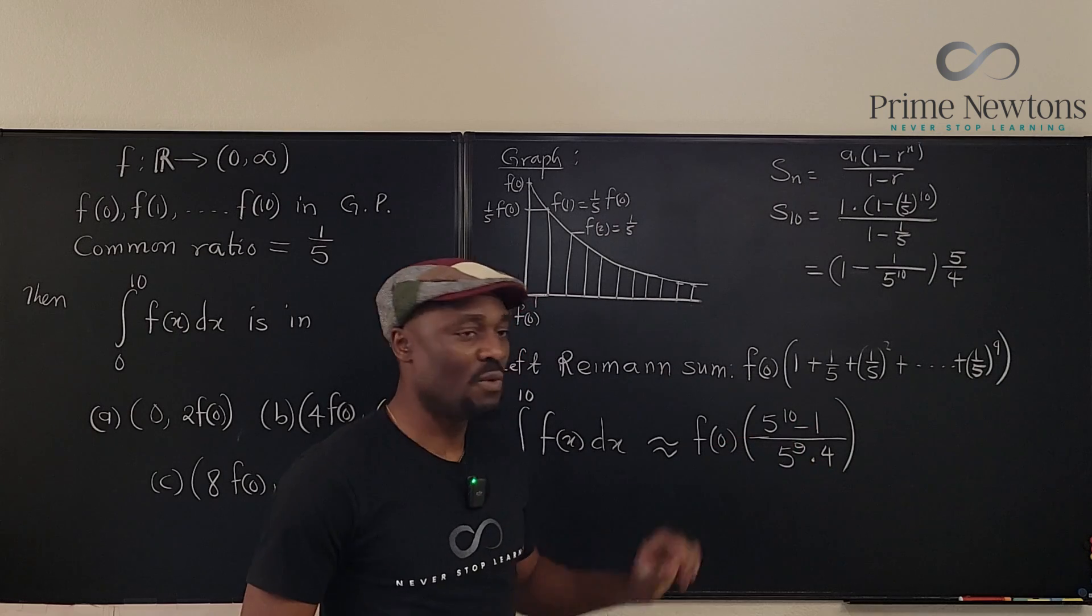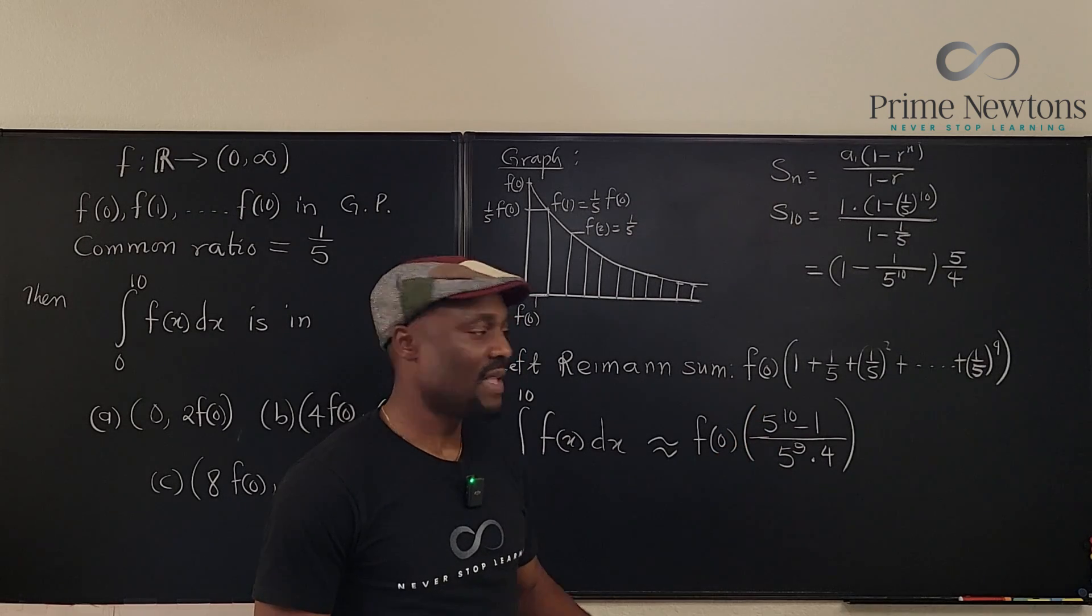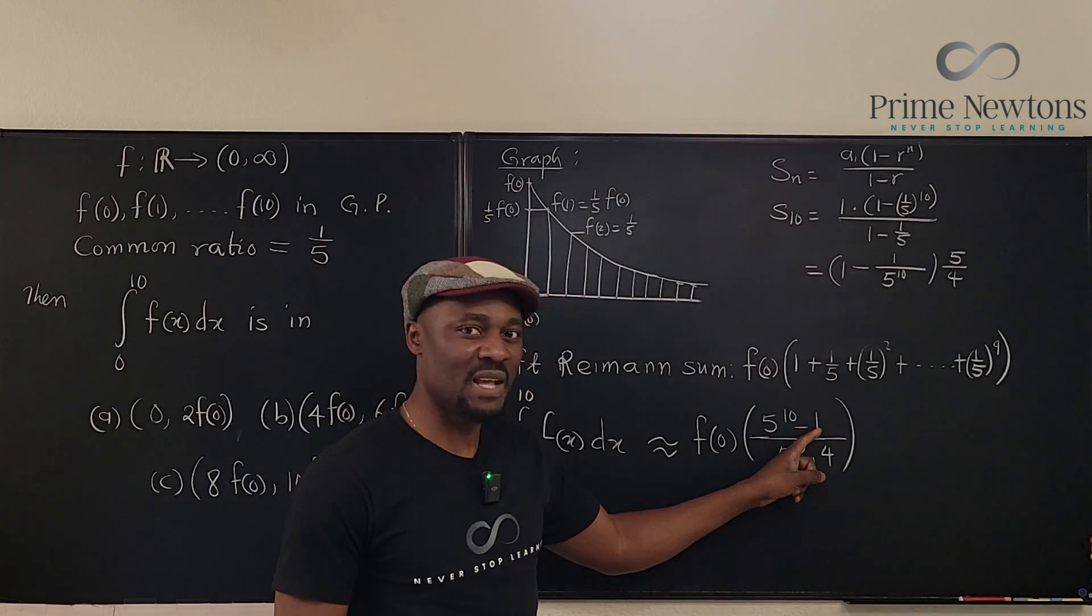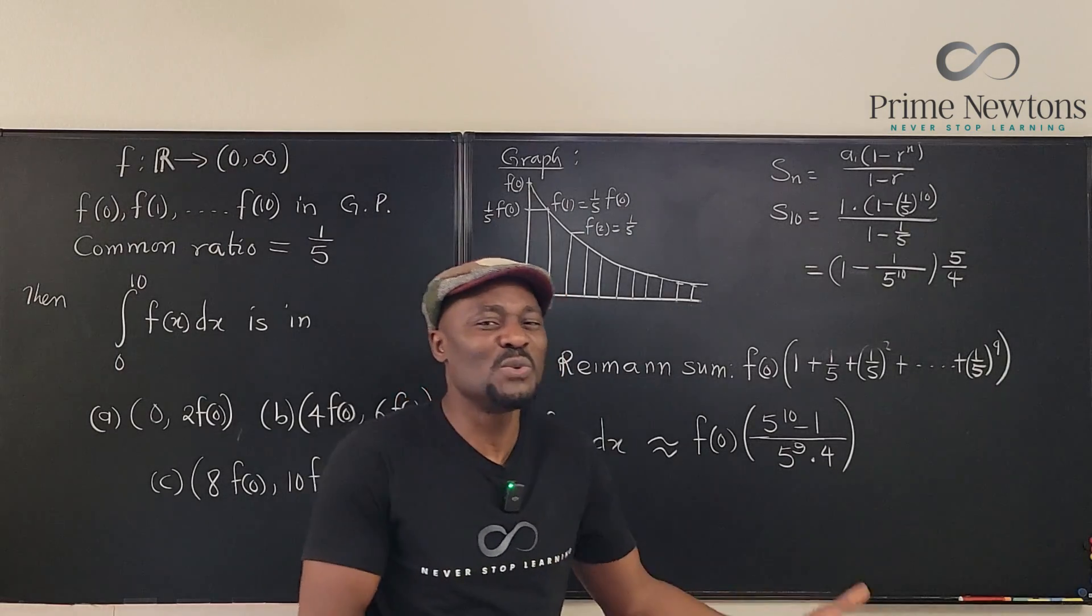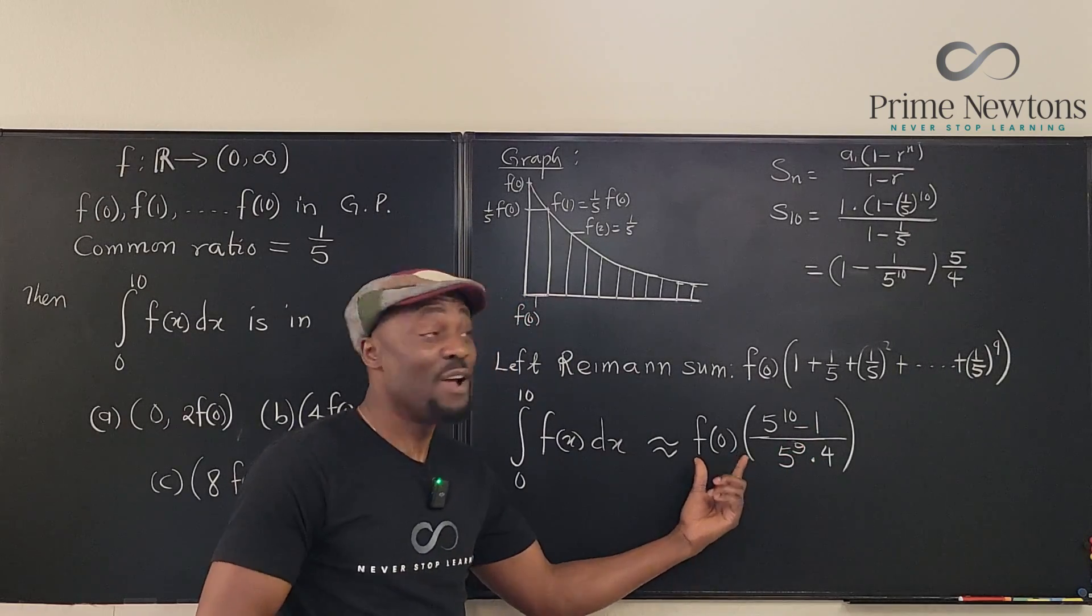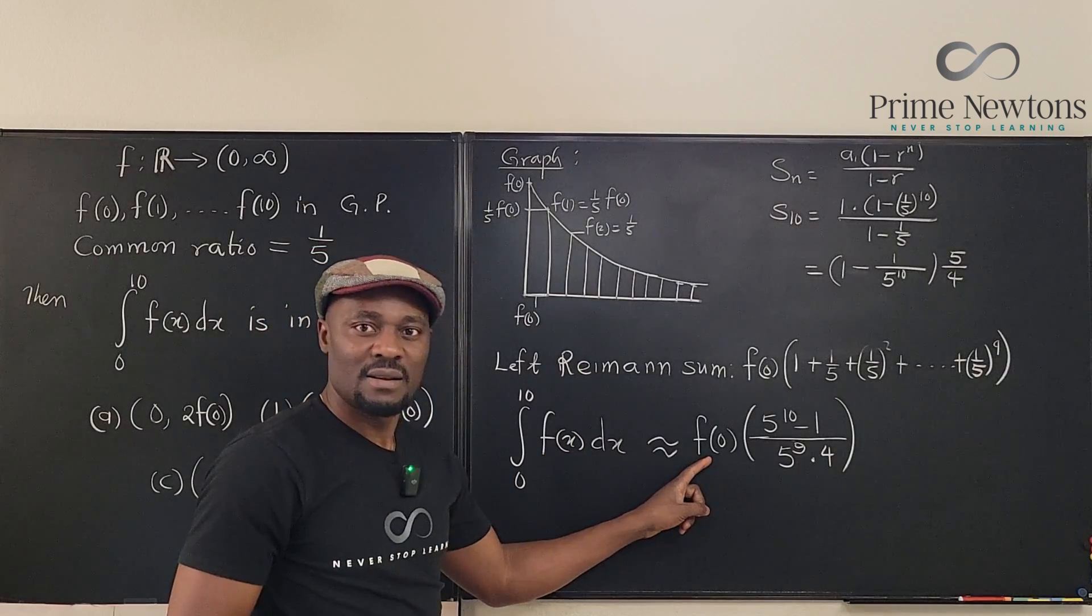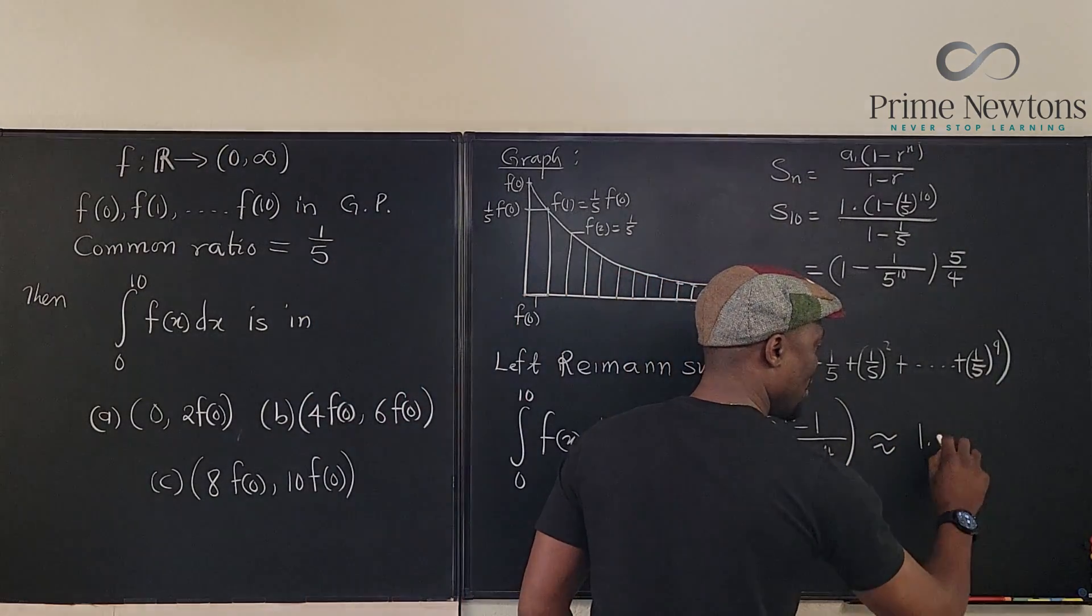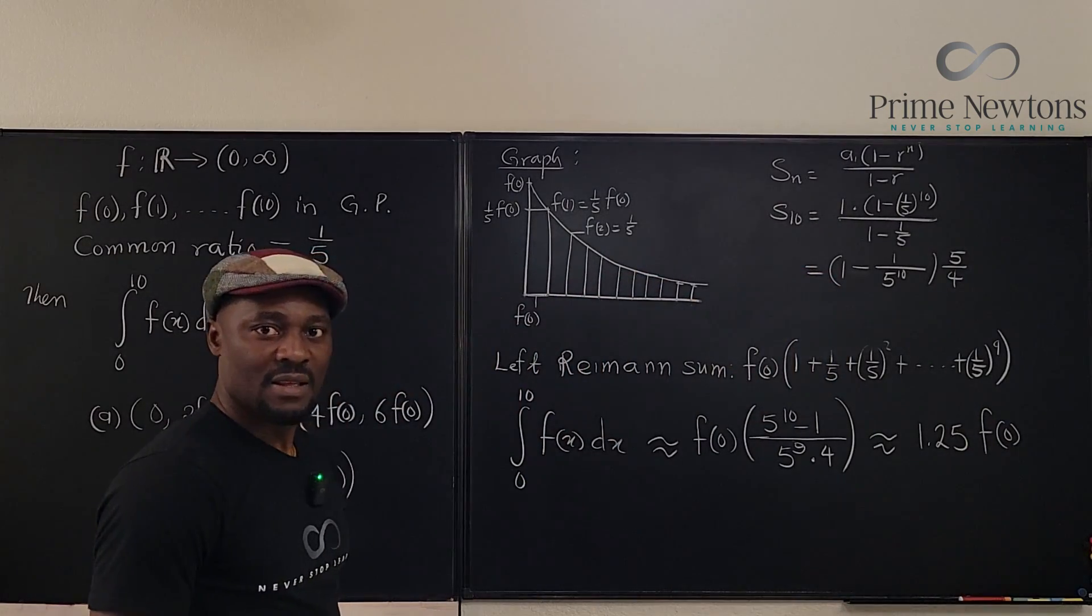Now you do not need a calculator for this. Let's assume we ignore this one. If you divide 5^10 by 5^9, you're going to get just five. Now five divided by four is one point something. So because this number is significantly bigger than this, your approximate value is 1.25 at the most, 1.26 or even less, 1.24 because you're subtracting. So the most you can get here for the overestimate is a number that is just slightly greater than f(0) because you're multiplying by one point something. So this is approximately 1.25 f(0).